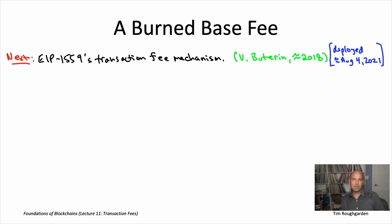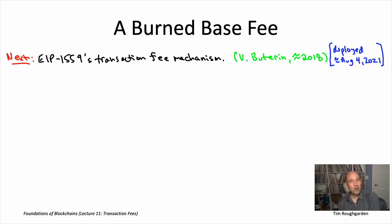While this transaction fee mechanism will be discussed in the context of Ethereum, the key ideas are not overly Ethereum-specific. That's why it's covered in an economics sequence rather than the Ethereum deep dive. In principle, Bitcoin could also switch from first-price auctions to EIP-1559's mechanism, though the Bitcoin community is unlikely to make such major changes. Variants of this mechanism have also been implemented in smaller blockchains including Near and Filecoin.